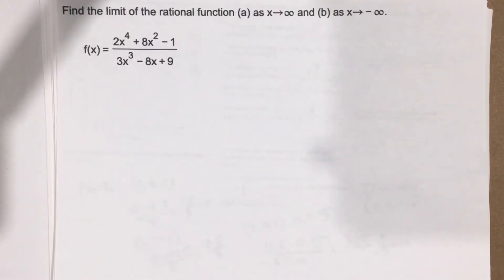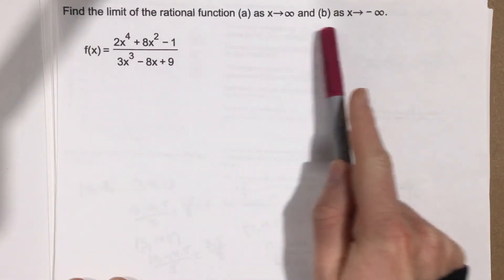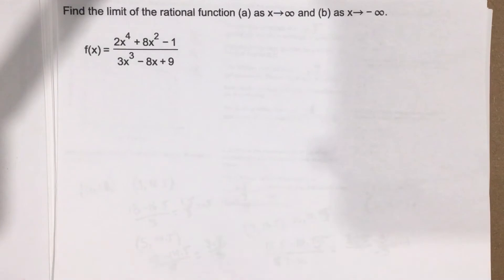This is problem number 3 from section 2.6. In this problem it says, find the limit of the rational function as x approaches infinity and as x approaches negative infinity.